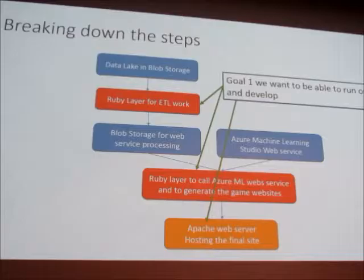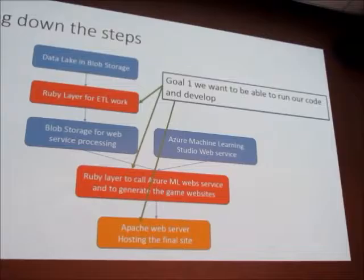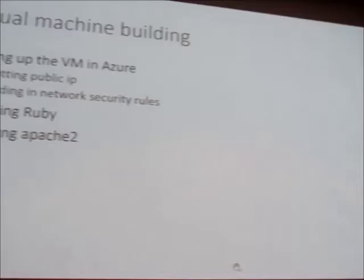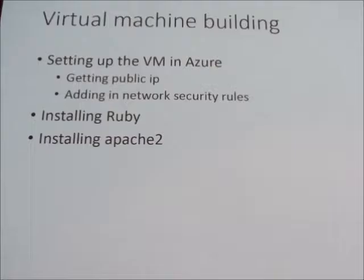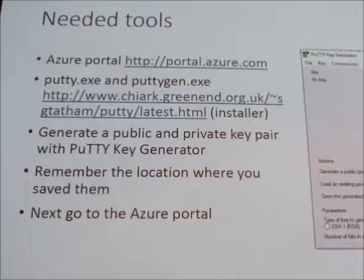The first goal is setting up the virtual machine, so we'll be able to work on the Ruby layers and also use that virtual machine to host the web service. Some important parts with setting up the VM on Azure: you need to get your public IP set up, set up your network security, and install Ruby and Apache 2.